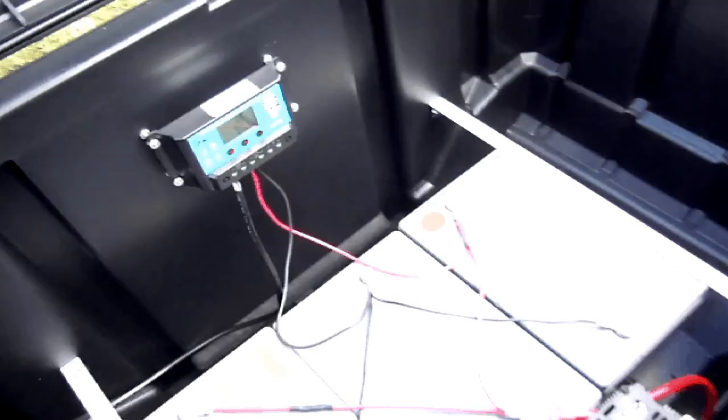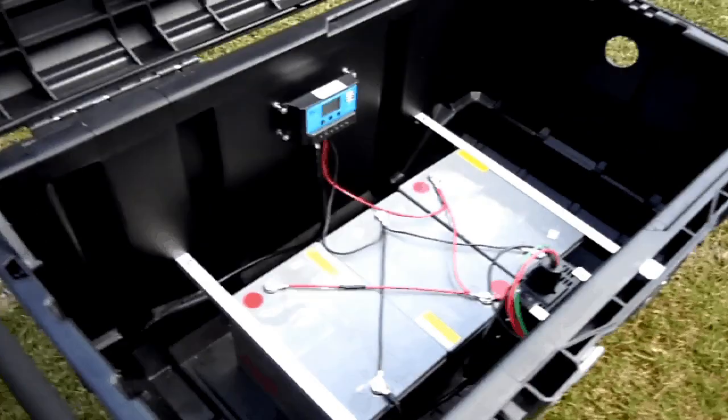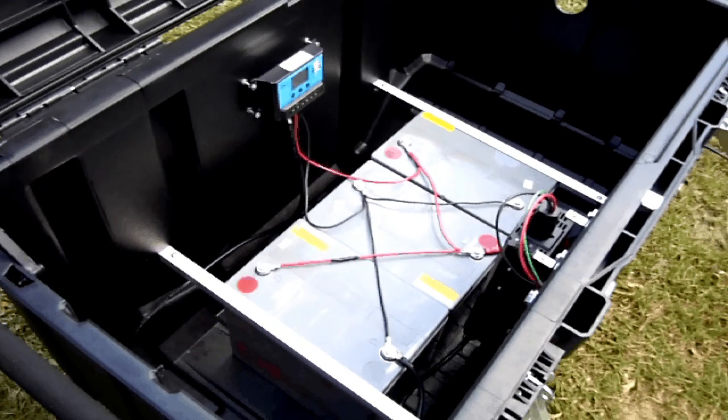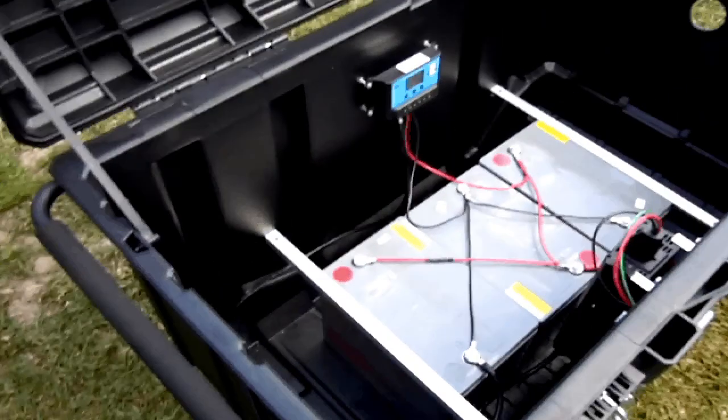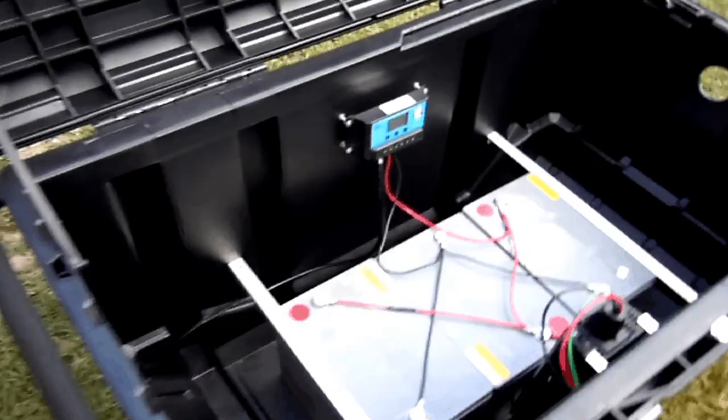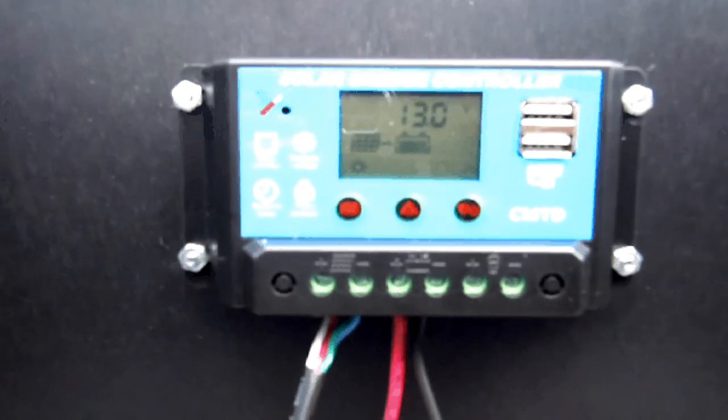And inside the box we notice three gel batteries. These are AGM batteries. They are each 75 amp hours and they are being charged by this 10 amp charge controller which has a digital display.